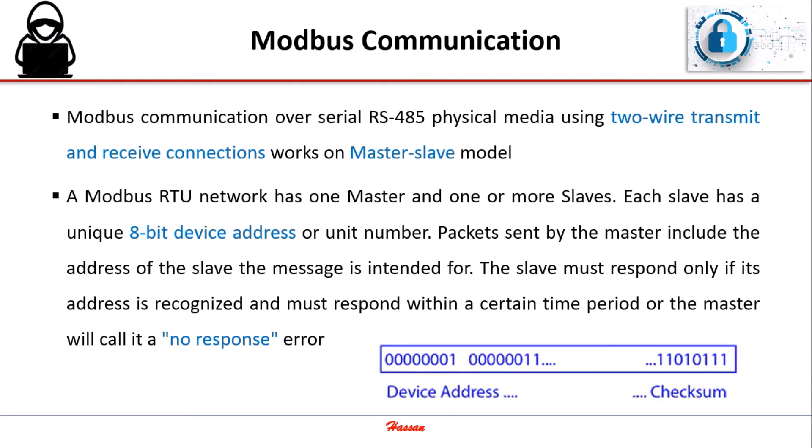Modbus communication over serial RS-485 physical media using two-wire transmit and receive connections works on a master-slave model. A Modbus RTU network has one master and one or more slaves. Each slave has a unique 8-bit device address or unit number. Packets sent by the master include the address of the slave the message is intended for. The slave must respond only if its address is recognized and must respond within a certain time period, or the master will call it a no-response error.